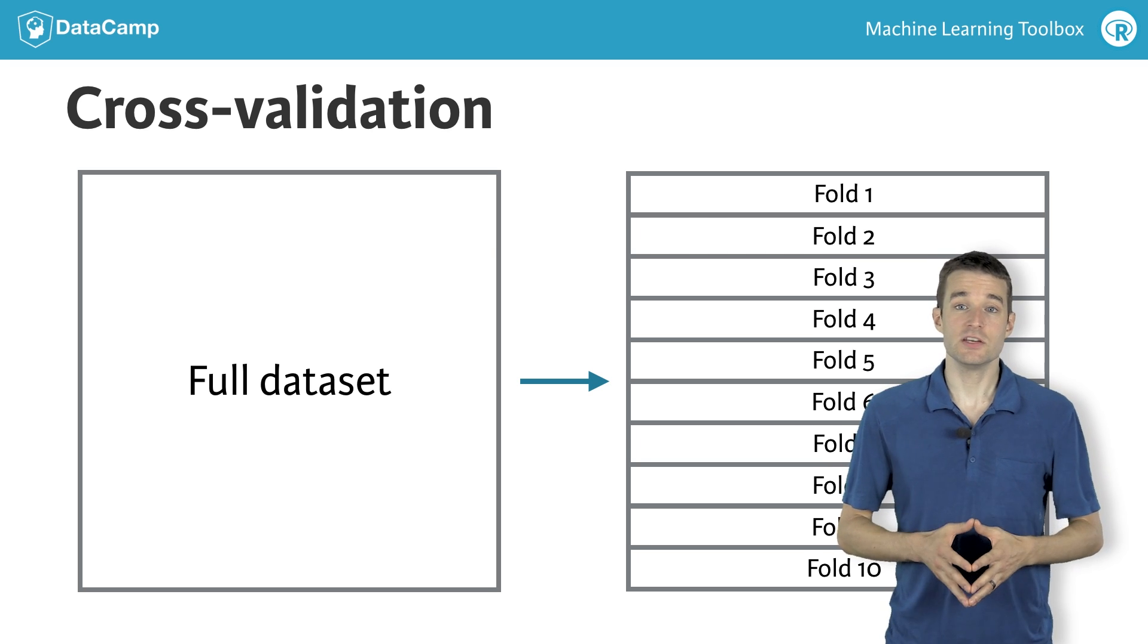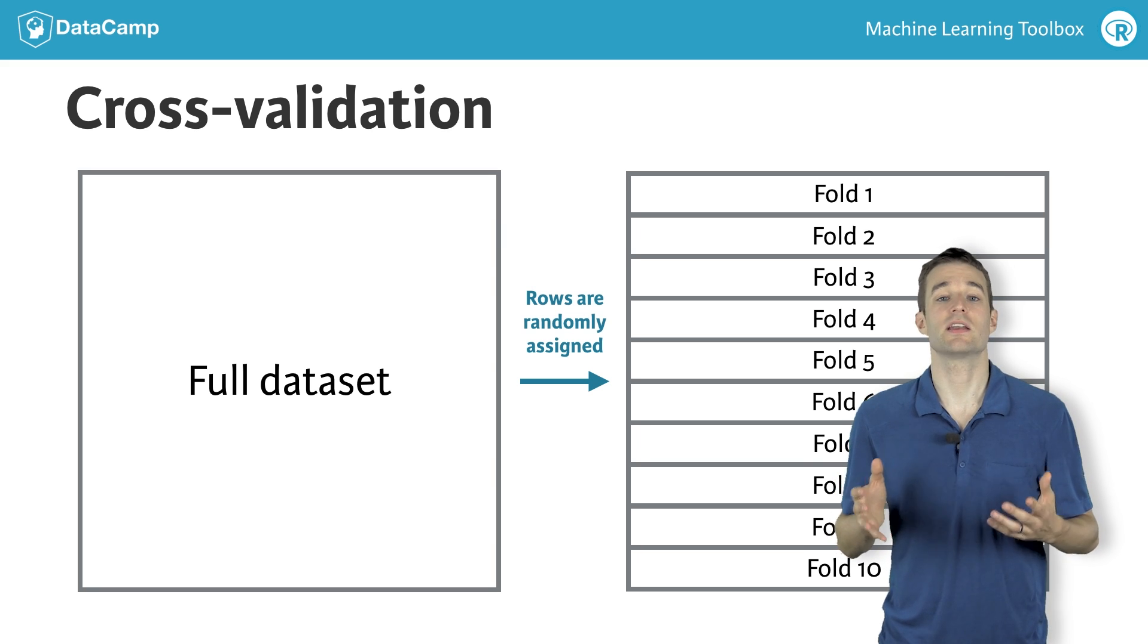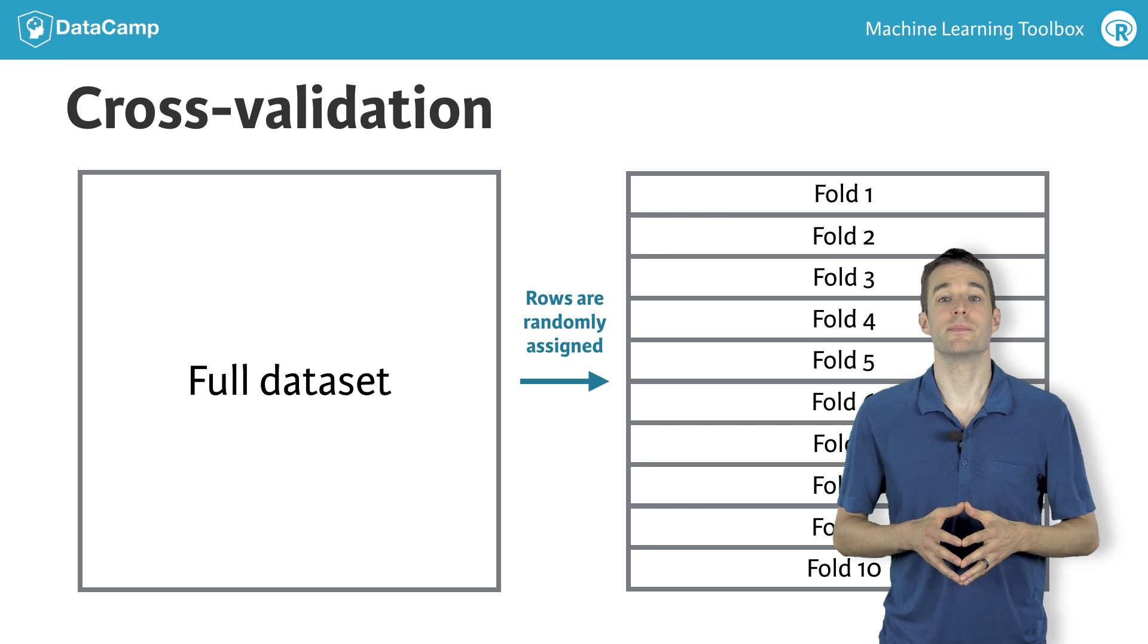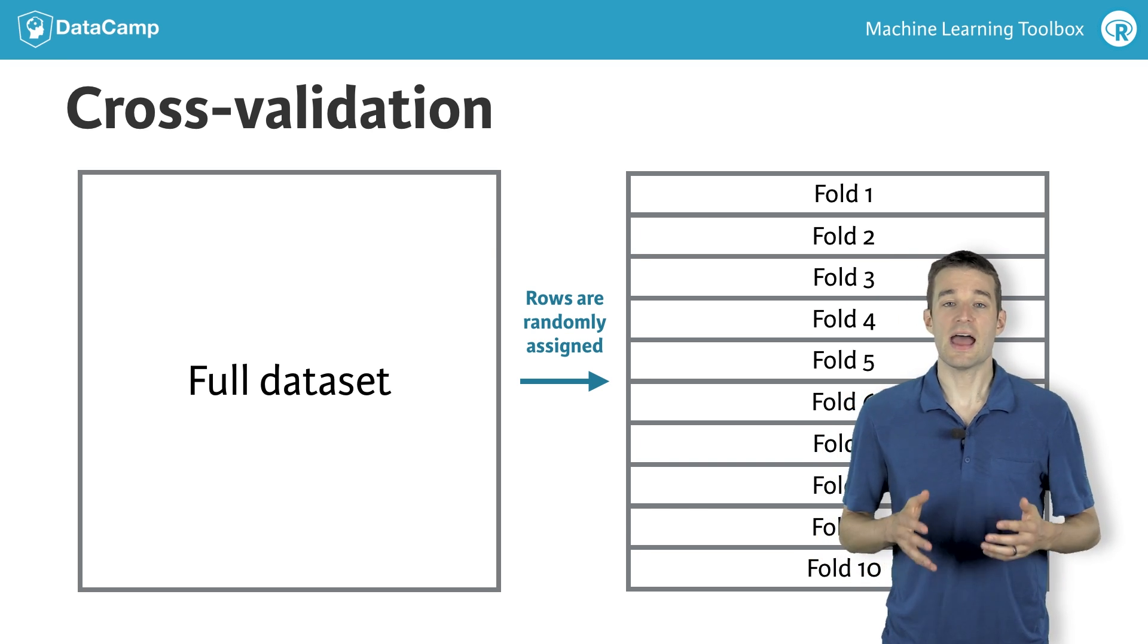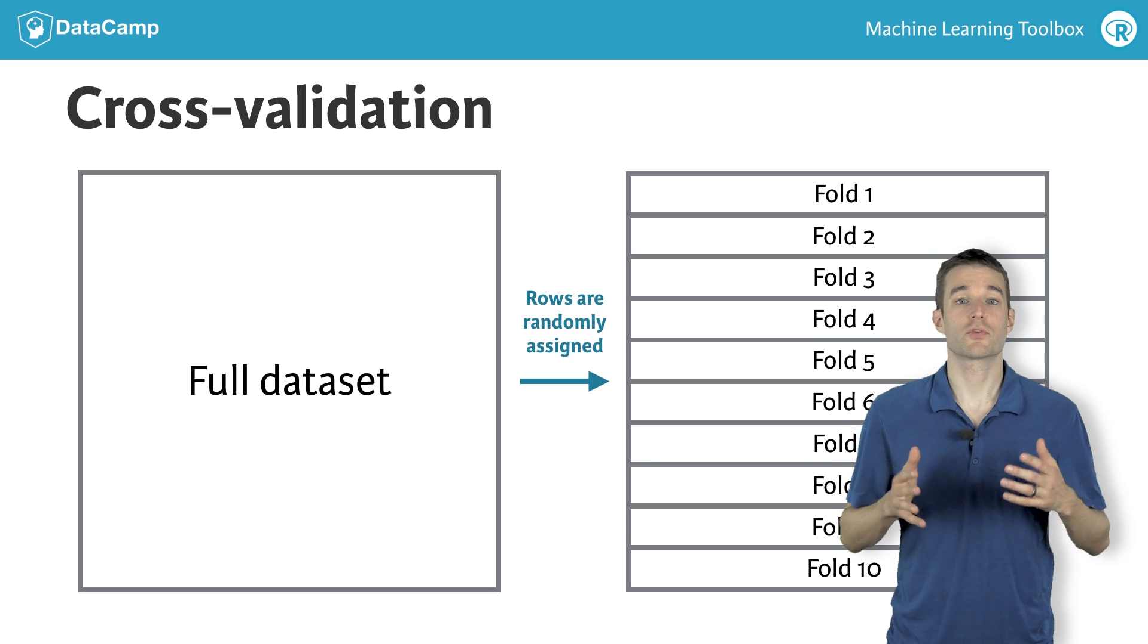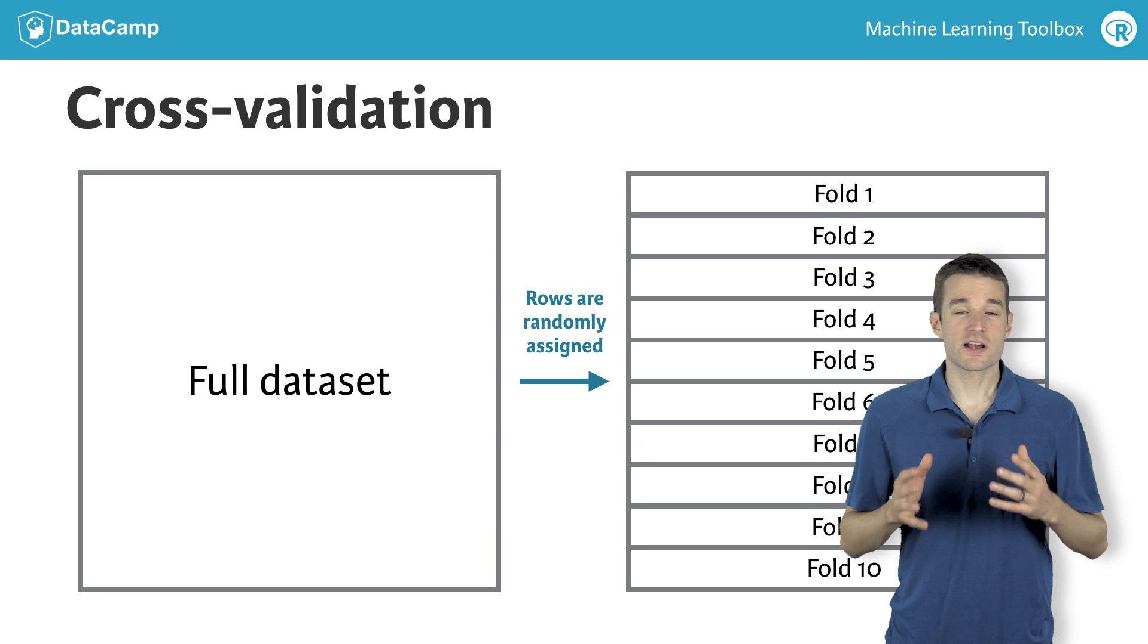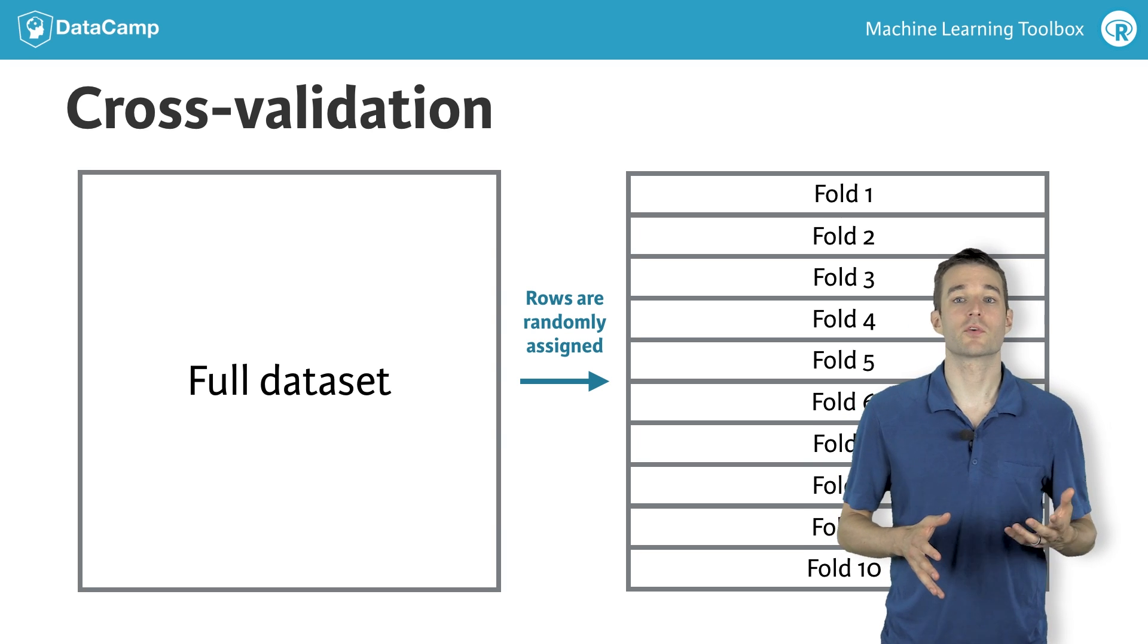We assign each row to its test set randomly to avoid any kinds of systematic biases in our data. This is one of the best ways to estimate out-of-sample error for predictive models. One important note: after doing cross-validation, you throw away all the resampled models and start over. Cross-validation is only used to estimate the out-of-sample error for your model.